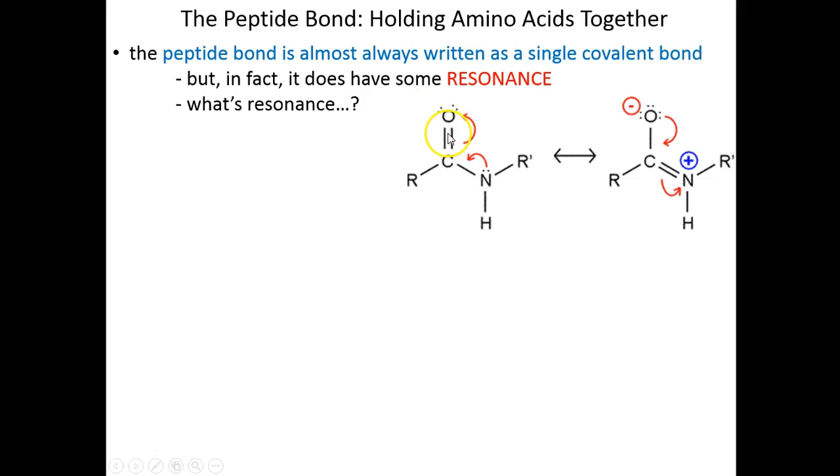The shared electrons literally oscillate or fluctuate between being shared here, giving a double bond between this carbon and oxygen, and shared here, giving a double bond between this carbon and nitrogen. This double bond literally flips back and forth—that's called resonance.